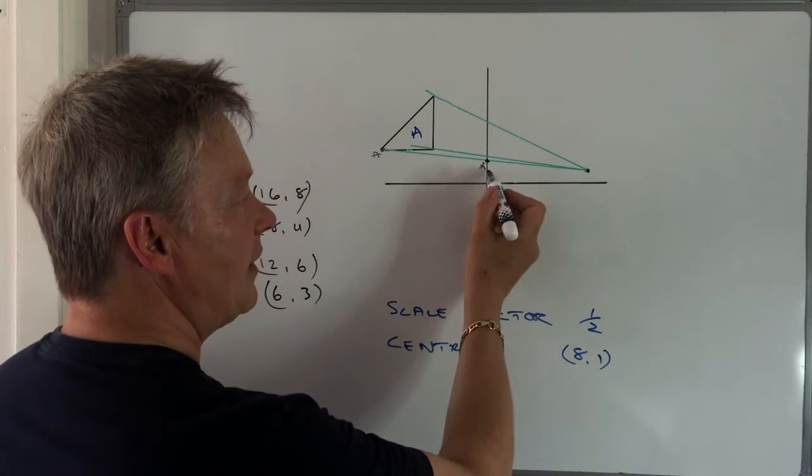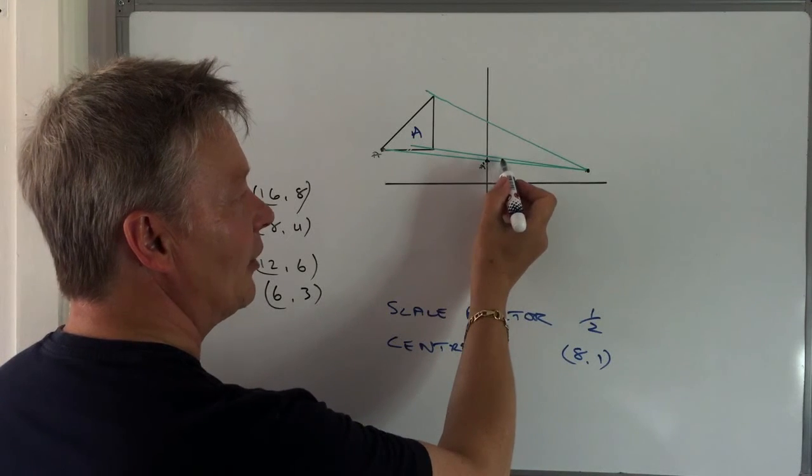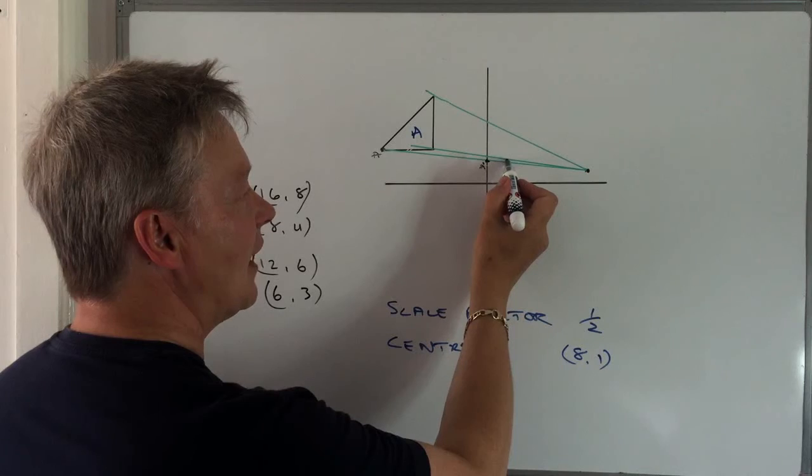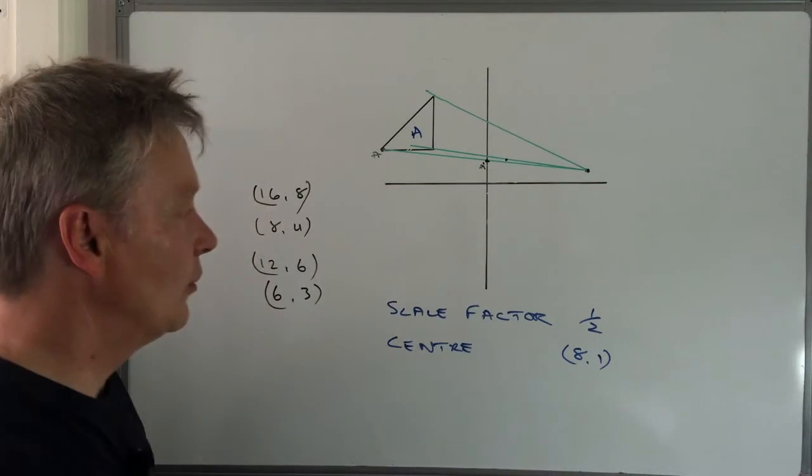I'm now going to go along 6 and up 3. So I just go along 6, which is about there, and up 3, which is going to be something like about there. Okay.